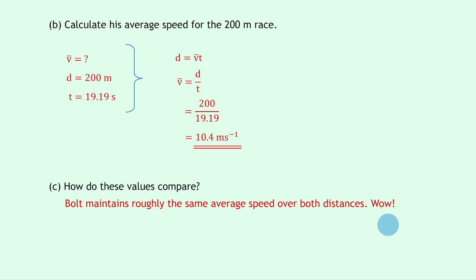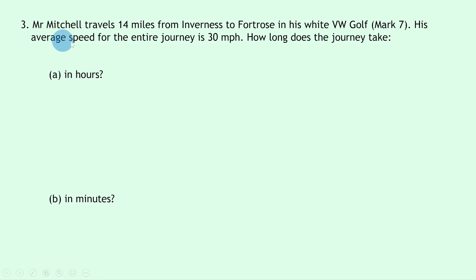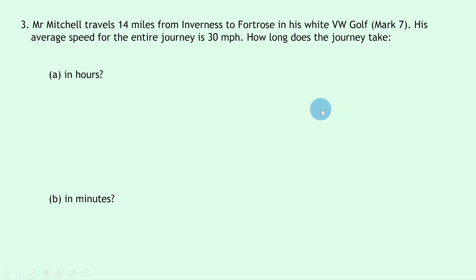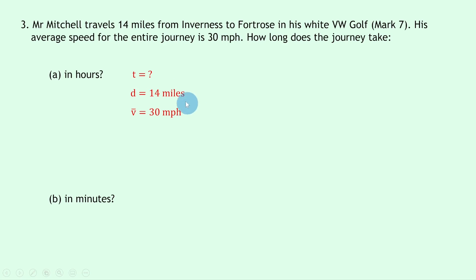Lastly, question three says: Mr. Mitchell travels 14 miles from Inverness to Fortrose in his white Volkswagen Golf Mark 7 — this was when I was in the Highlands during my probation year as a teacher. His average speed for the entire journey is 30 miles per hour. How long does the journey take in hours, and then in minutes? For part a in hours: writing down what we know, we're trying to find the time t, the distance is 14 miles, and the average speed is 30 miles per hour.